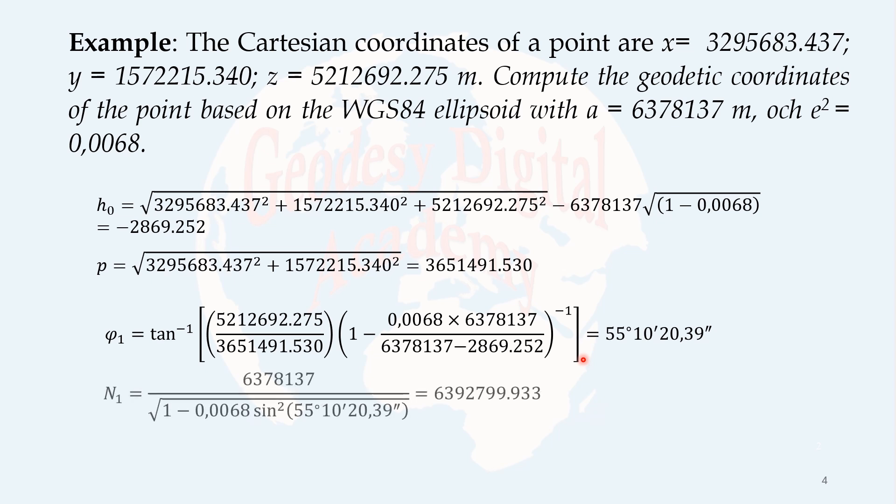Now, in the next round, we will compute the new n value. So, how? Because I have now this phi, new phi. This new phi comes here. And I get n. And from this new n and the new phi, I get h1. Now, this h1 and n1 should be inserted back to the formula to get a new phi.